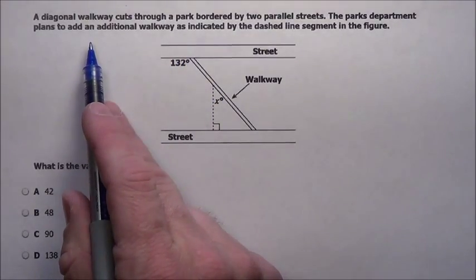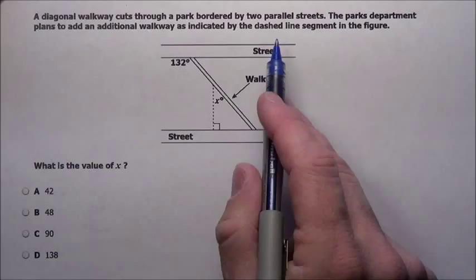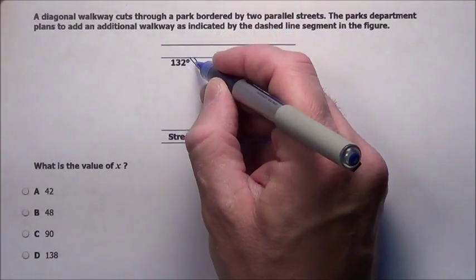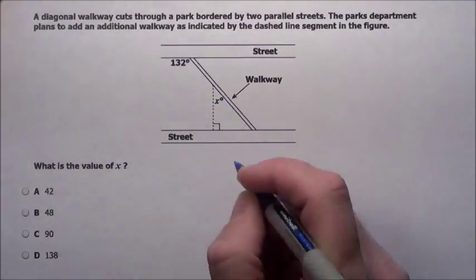The parks department plans to add an additional walkway as indicated by the dashed line segment. So they want to add - excuse me - they have this coming across and they want to add this here.